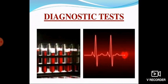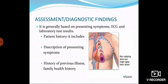Next is the diagnostic evaluation for myocardial infarction. The assessment is generally based on presenting symptoms, ECG, and laboratory test results. First, we collect the patient's history, which includes a description of presenting symptoms, history of previous illness, and family health history — for example, whether any family member previously had a cardiac disease (hereditary factors).